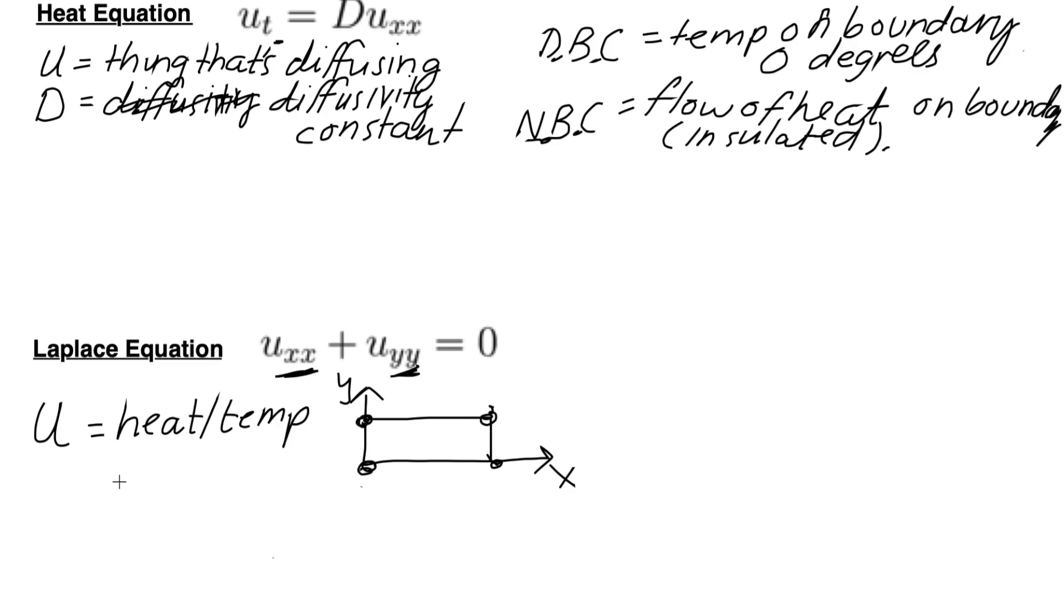So the Dirichlet and Neumann boundary conditions are just talking about the change with respect to the X coordinate and change with respect to Y coordinate. But it's not changing over time because this is actually the steady state heat equation.